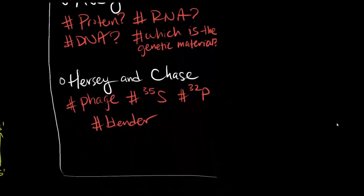Hershey and Chase confirmed this by using phages, which are viruses that attack bacteria. Viruses are made of a protein coat and DNA. By having two groups of viruses — one with their protein coats tagged with radioactive sulfur, and the other having their DNA tagged with radioactive phosphorus — he was able to check what was actually being injected into the bacteria. He saw that what was being passed on was the DNA.